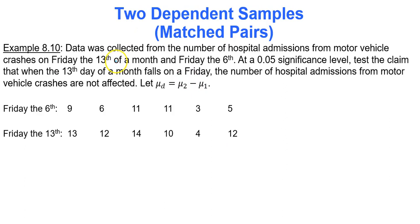Let's talk about an interesting example. Data was collected from the number of hospital admissions for motor vehicle crashes on Friday the 13th of a month and Friday the 6th. At a 0.05 significance level, test the claim that when the 13th day of a month falls on a Friday, the number of hospital admissions for motor vehicle crashes are not affected. We're defining the mean difference as group 2 minus group 1. Group 1 will be my Friday the 6th, and group 2 will be Friday the 13th. I have this list of hospital admissions: 9, 6, 11, 11, 3, and 5.